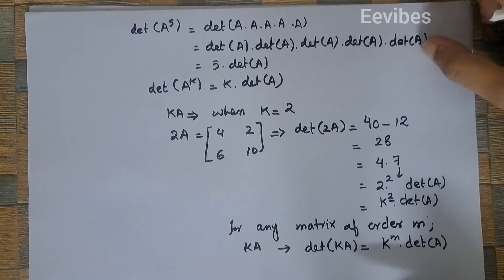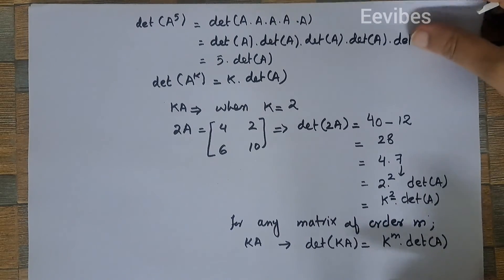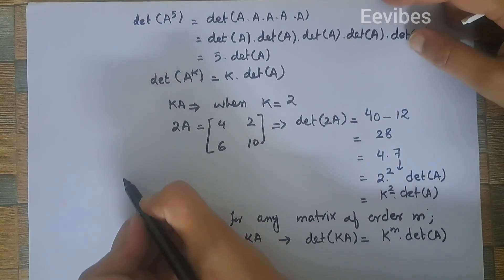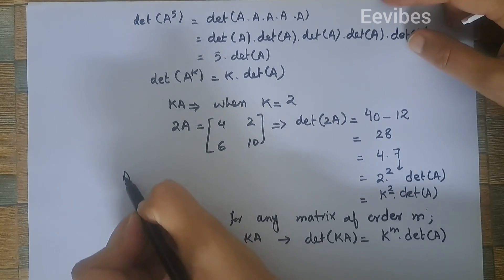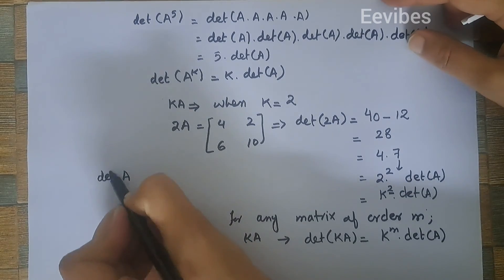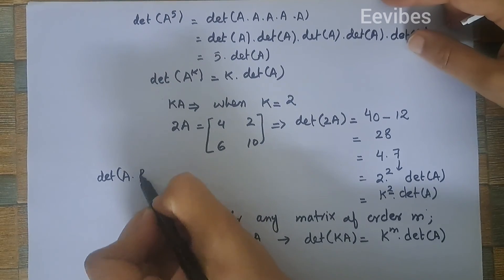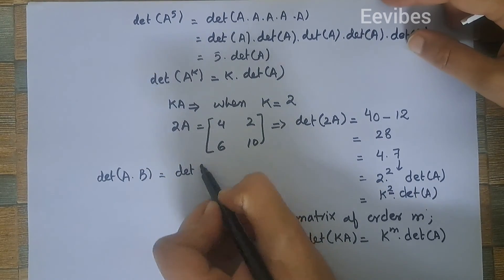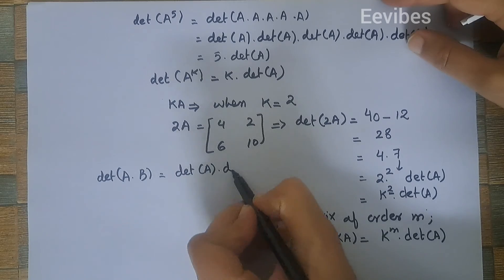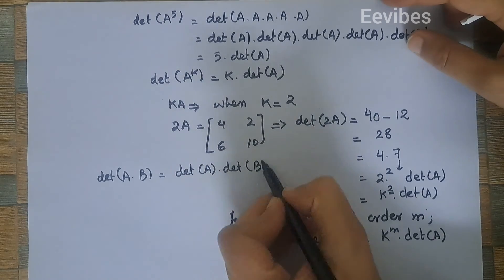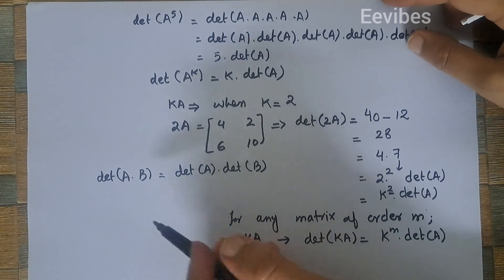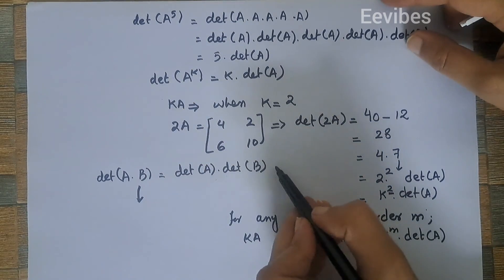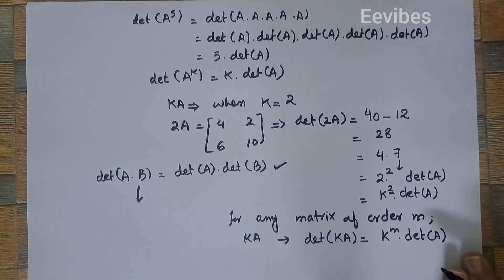Another property we can also state is: the determinant of A times B is actually equal to the determinant of A times the determinant of B. You can verify this property by taking any matrix B of your own choice and verifying it yourself. Thank you for watching.